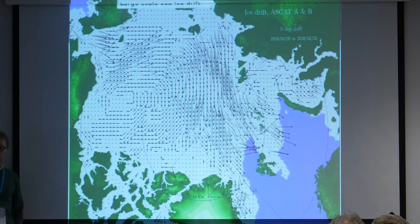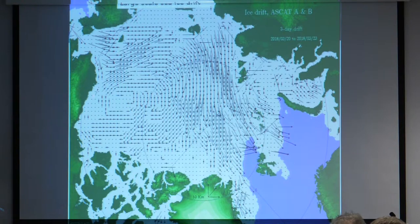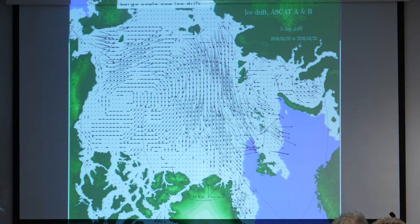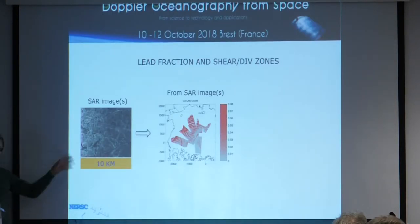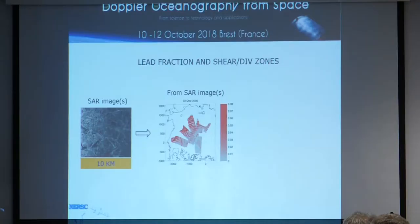Not to forget, the ice also moves around due to wind forcing. This large-scale map from CERSAT shows the transpolar drift and the Beaufort Gyre, where the vectors represent 50 kilometers and it's a three-day snapshot. That's a large-scale circulation map at orders of 25–50 kilometer resolution. But there is some motion more typically characterized at the mesoscale, at much less than 25 kilometer resolution.